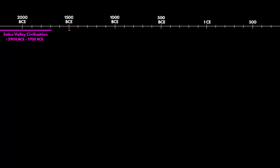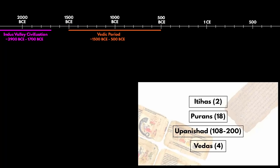After the Indus Valley Civilization, the Vedic period started — we also call it the Vedic Age. The time period of this age starts from 1500 BCE to 500 BCE. It is called the formative period where the basic foundations of Indian civilization were laid down through the Vedas, Upanishads, Purans, and Itihas. Today, these scriptures are known as the oldest scriptures as well as the foundation of the Hindu religion, and they were composed in Sanskrit language. In Sanskrit, the word 'Ved' means knowledge — that is how the Vedas became the foundation of the Vedic period and the modern Hindu religion.